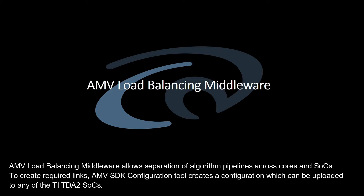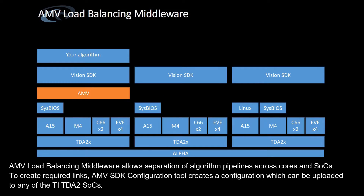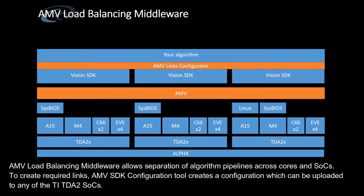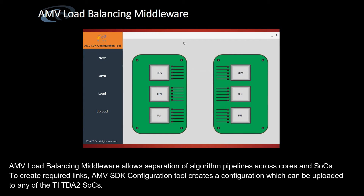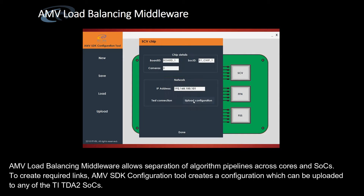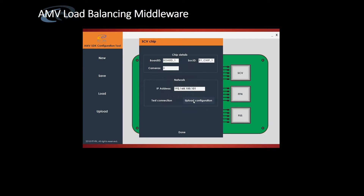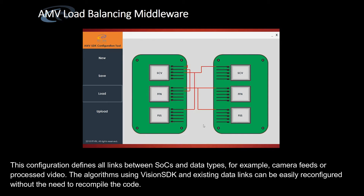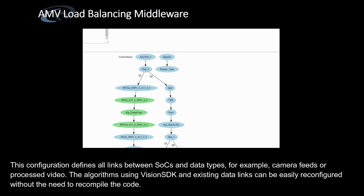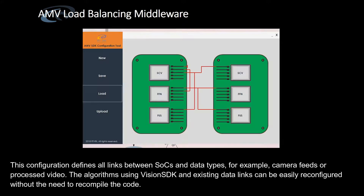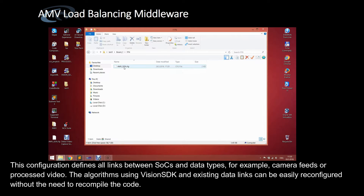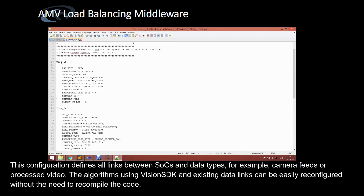AMV load balancing middleware allows separation of algorithm pipelines across cores and SoCs. To create required links, the AMV SDK configuration tool creates a configuration which can be uploaded to any of the TI TDA-2 SoCs. This configuration defines all links between SoCs and data types — for example, camera feeds or processed video.